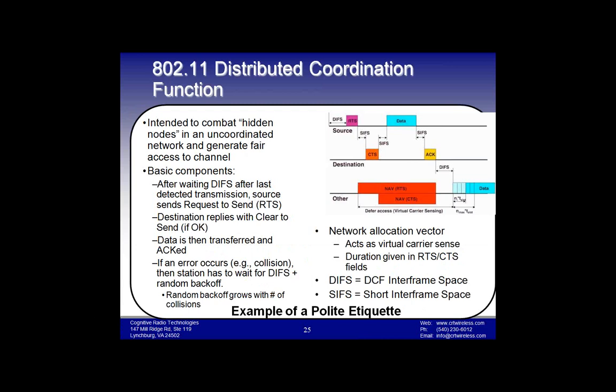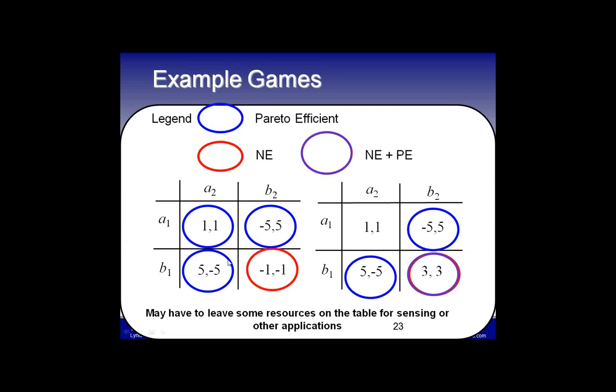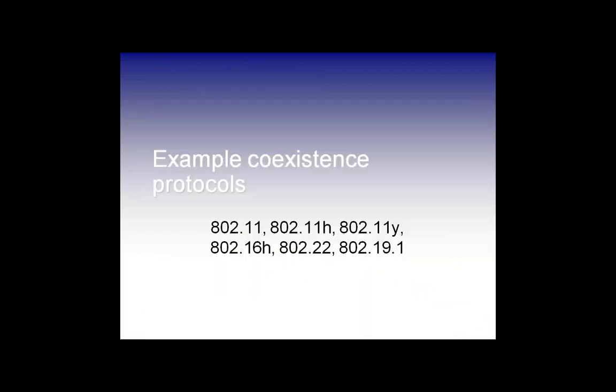There was a question: do potential games always result in a Pareto efficient solution? No, not at all. The Prisoner's Dilemma is actually a potential game — it's just not one you want to implement. In that game the expected resulting behavior is in a dominated state, whereas any of the other three states the system could have taken would have been Pareto efficient. So potential games do not guarantee Pareto efficiency.